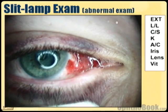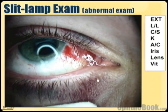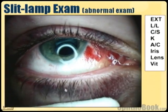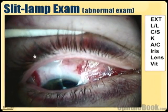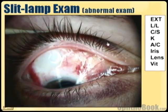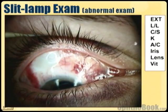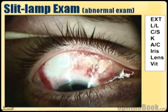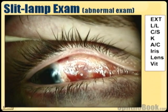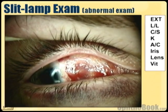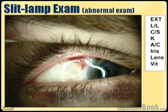Now let's see a patient who is not normal. EXT is within normal limits. Lids and lacrimation — he's got some chemosis. This patient fell and landed on his eye — chemosis but otherwise normal lids. Conjunctiva and sclera — you can see some red here; that's blood underneath the skin of the eye, under the conjunctiva, so he has some subconj heme.